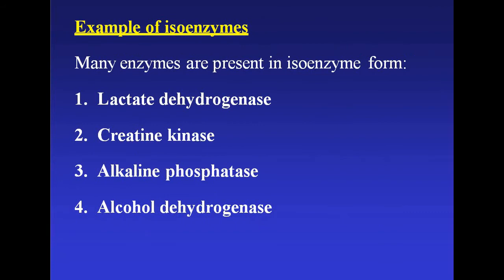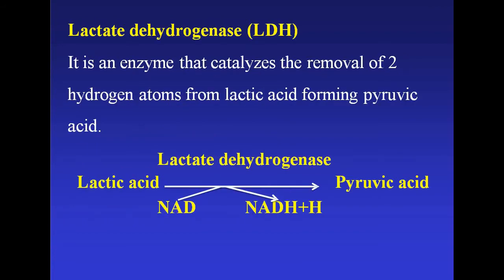What are the examples of isoenzymes? Isoenzymes are present in lactate dehydrogenase, creatine kinase, alkaline phosphatase, and alcohol dehydrogenase. We can discuss all of them one by one, starting with lactate dehydrogenase.